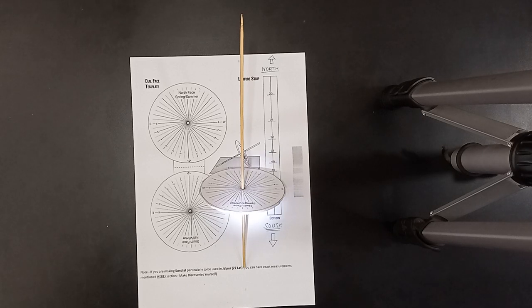And now the sun is going towards west to be set in few hours. Look at the shadow. Look at the shadow that is moving towards the right side. 1 p.m., then 2 p.m., then 3 p.m. like that.